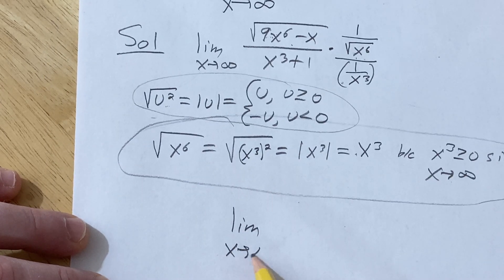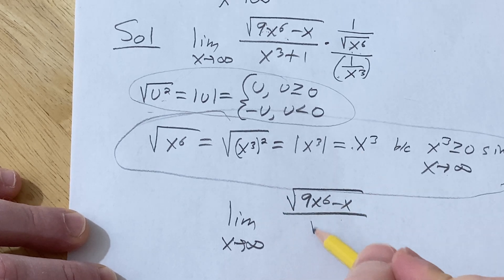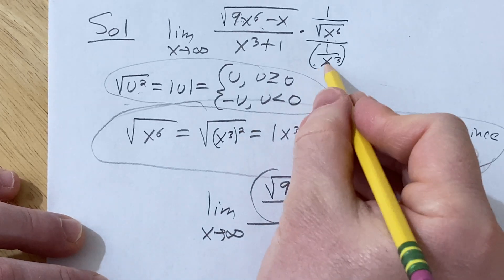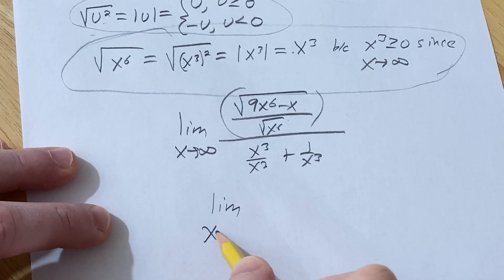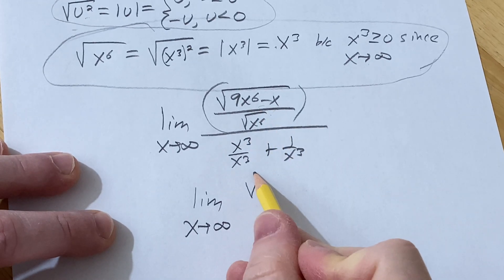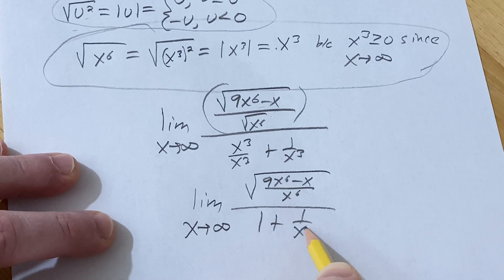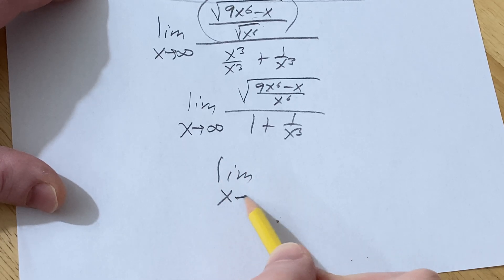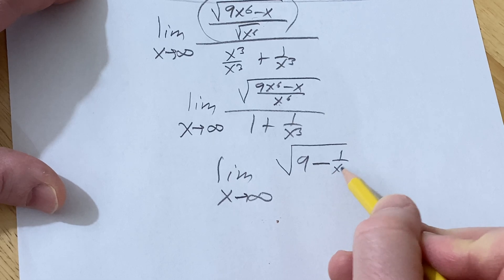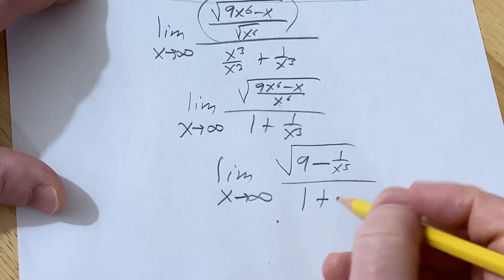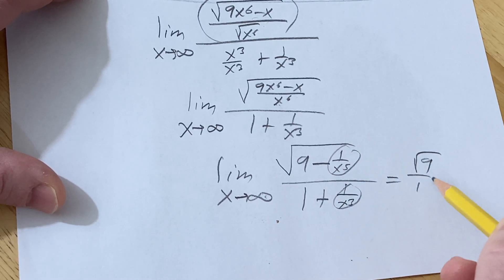This is the limit as x approaches infinity. Now we can combine these. On the bottom, let's distribute: it'll be x³/x³ plus 1/x³. Now we can combine these square roots. It'll be √((9x⁶ - x)/x⁶) over (1 + 1/x³). You can break this up: 9x⁶/x⁶ is just 9, and x/x⁶ is 1/x⁵. So we have √(9 − 1/x⁵) over (1 + 1/x³). As x approaches infinity, 1/x⁵ approaches 0 and 1/x³ approaches 0, so you get √9 / 1, which is just 3.